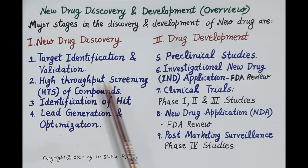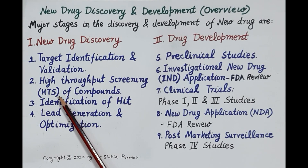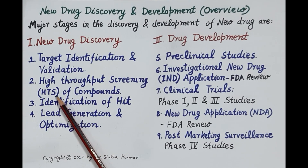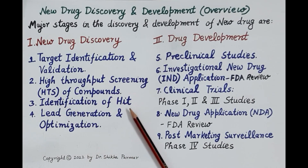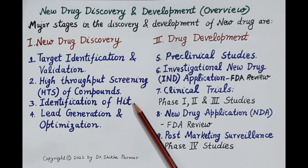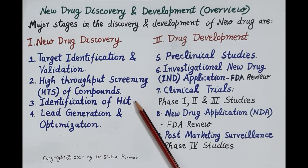The next step is the screening of around 5,000 to 10,000 potentially active compounds by high throughput screening (HTS). From these compounds, around 100 to 200 compounds specific for the target are selected and these are called hits. The next step in new drug discovery is the identification of hits, derived by screening of those 5,000 to 10,000 active compounds.